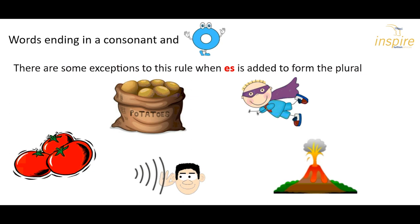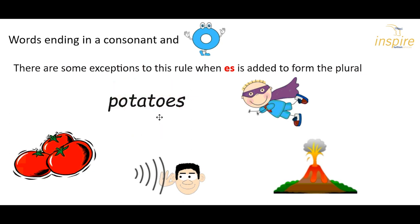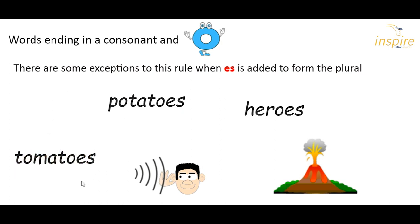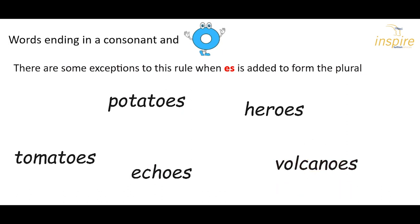There are some exceptions to this rule, though, and we need to add ES to form the plural. These ones you just need to remember. So if we have one potato, but lots of potatoes, we add ES. One hero, or lots of heroes, we add the ES. One tomato, but lots of tomatoes — ES. One echo, lots of echoes — ES. Volcano: volcanoes — ES. There's just some for you to remember.